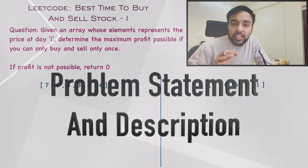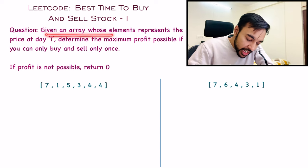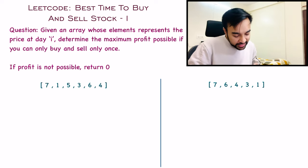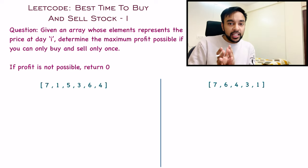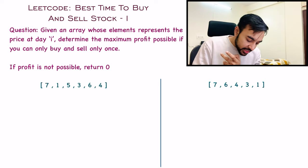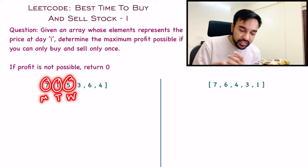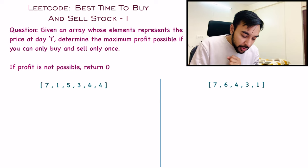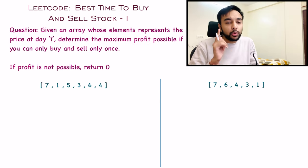Let us quickly make sure that we are understanding the problem statement correctly. In this problem, you are given an array whose elements represent the price at a certain day. So for example, if I have this array, then all of these elements are determining the price of a certain stock at consecutive days. So you can say 7 is the price on Monday, 1 is the price on Tuesday, 5 is the price on Wednesday, and so on — they are in a consecutive manner. You need to determine the maximum profit possible if you can buy and sell a stock only once.